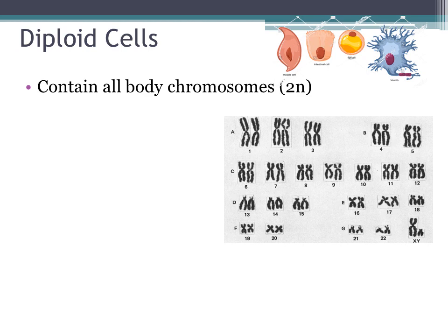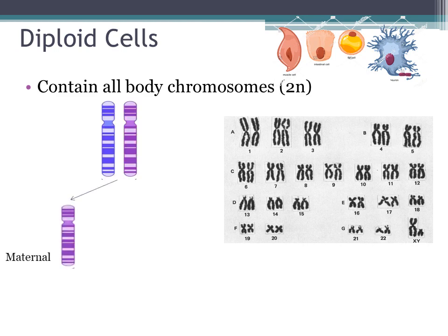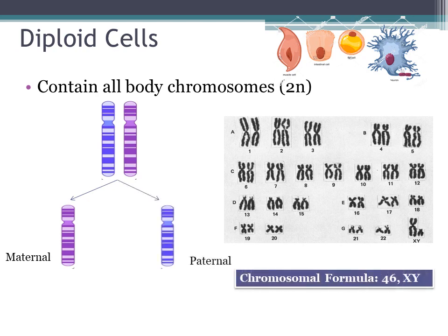It means that each chromosome is found in its homologous pair. This homologous pair consists of one chromosome of maternal origin, originating from the mother, and the other one is of paternal origin. So the chromosomal formula of this karyotype will be the total number of chromosomes, which is 46, and XY as sex chromosomes. Apparently, this karyotype belongs to a male.